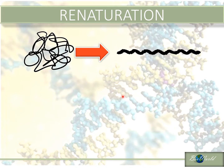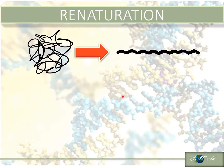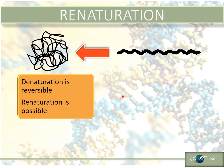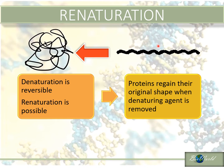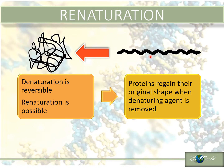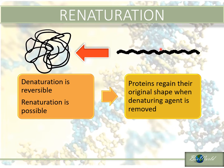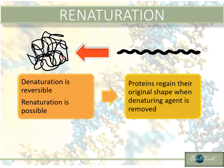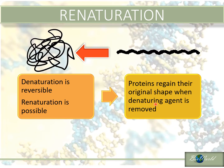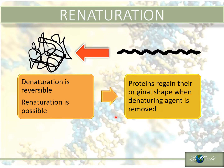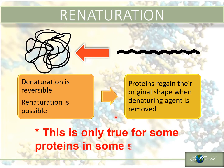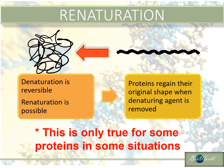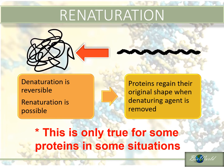There is a process opposite to denaturation called renaturation. In renaturation, the primary protein that formed due to denaturation can be reversed back to its original 3D structure. This occurs when we remove the denaturing agent. However, this does not apply to all proteins all of the time — it is only in special cases where renaturation can occur.